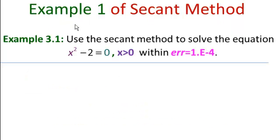In this video, we're going to solve our first example of using the secant method. Example 3.1: Use the secant method to solve the equation x squared minus 2 equals 0, x greater than 0, within an error of 10 to the minus 4.